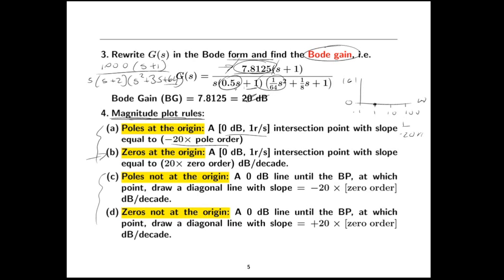Now if we have poles or zeros that are not at the origin, whether real or complex, we identify what the breakpoint table calls the order. For real poles, the order might be 1 or 2, etc. For complex poles, a second-order term has order 2. Regardless, you identify the breakpoint frequency — say it's 10 — for a factor like 1/(S+10). It's flat up until that point, then goes down at 20 dB per decade times the order. So order 1 drops at 20 dB per decade, order 2 at 40 dB per decade. If it's zeros not at the origin, it goes up at positive 20 dB per decade.